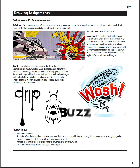Assignment number 53 is about onomatopoeia. You probably heard the term in high school, but if you don't remember, it's a word that sounds like what it means. If you think about the word 'ring' for example, when you hear it, one of the images that comes up is a bell.